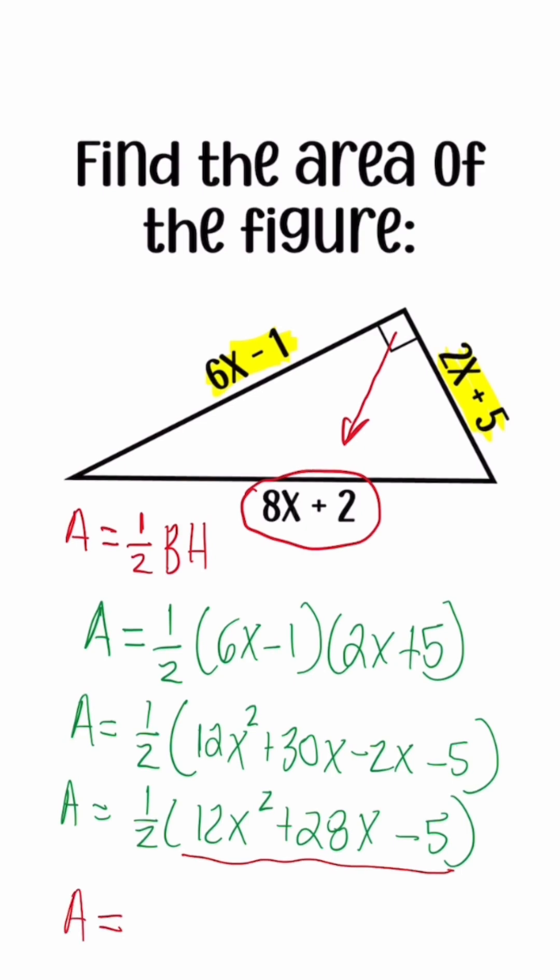So area is equal to 6x squared plus 14x minus 2.5, and this will be our answer for the area for this triangle.